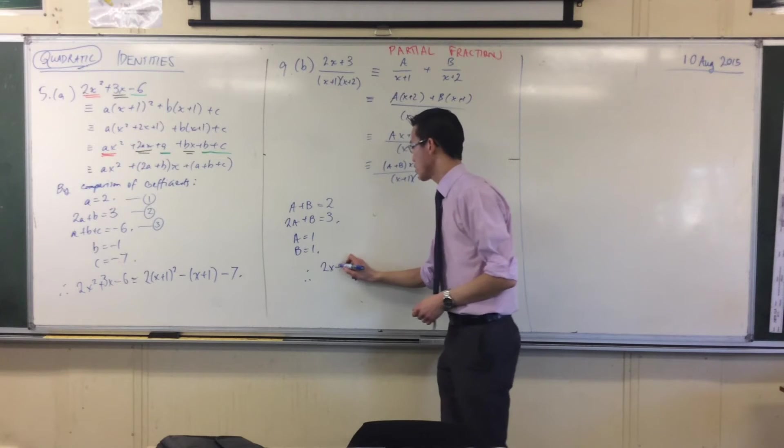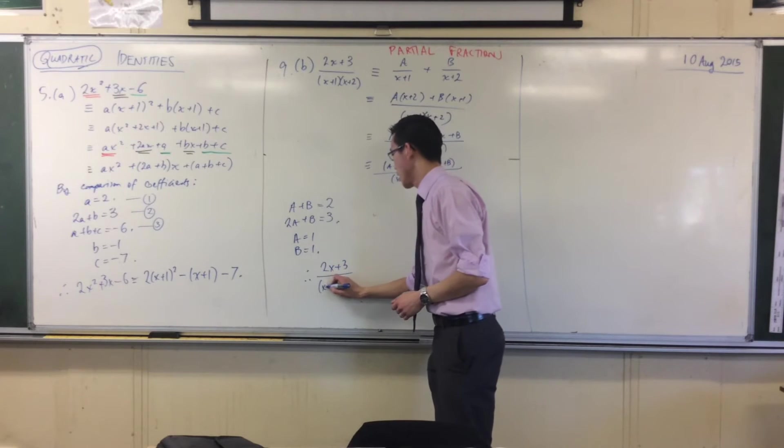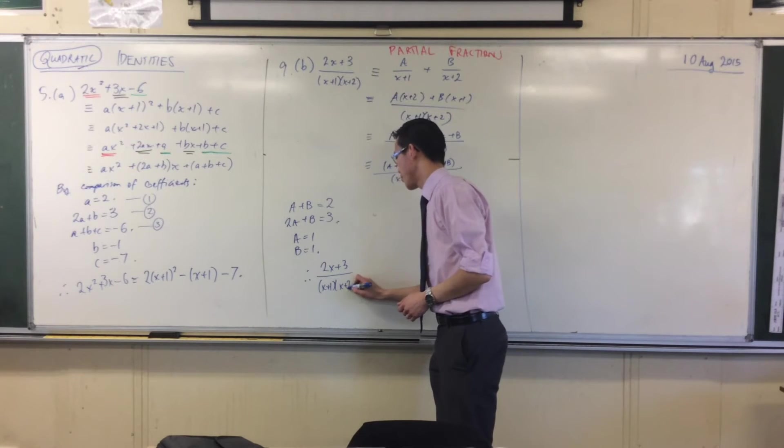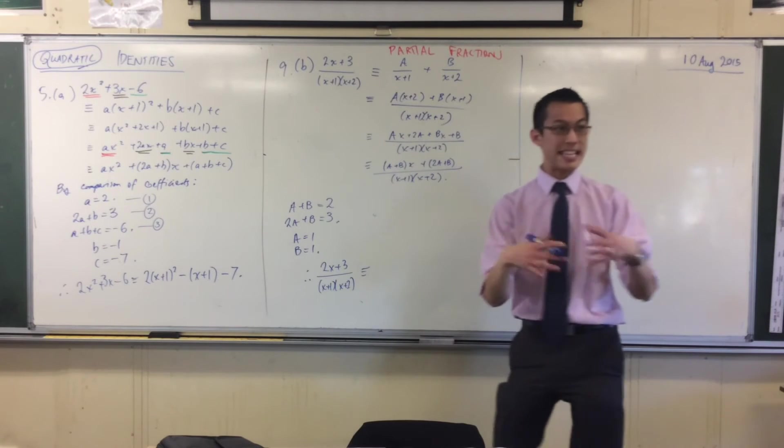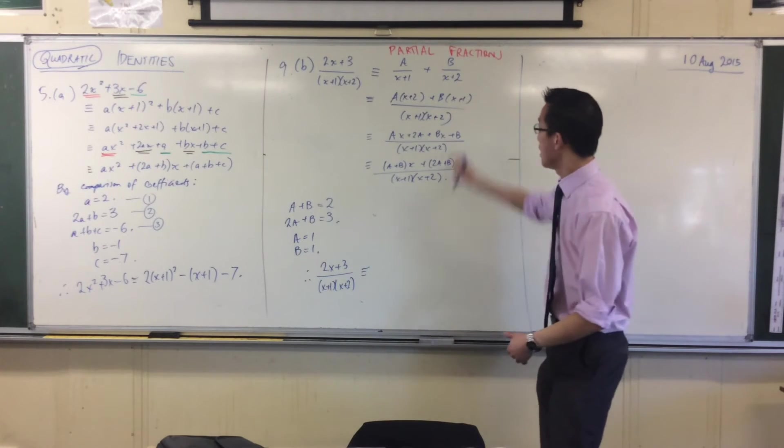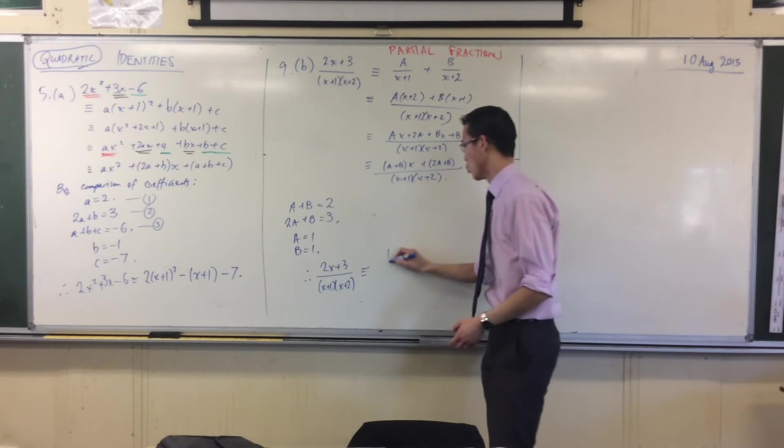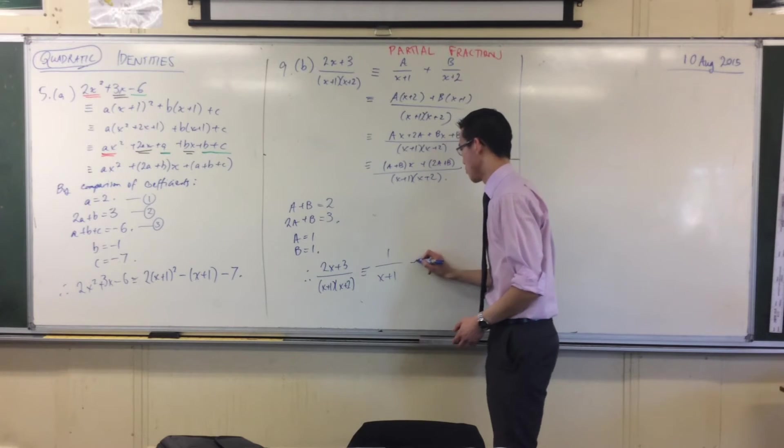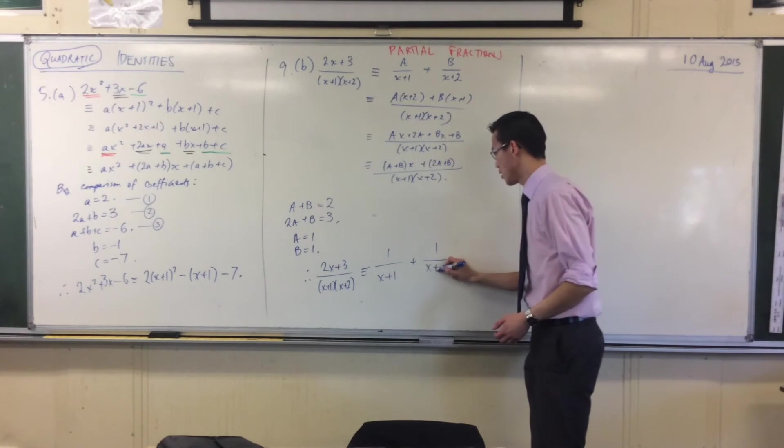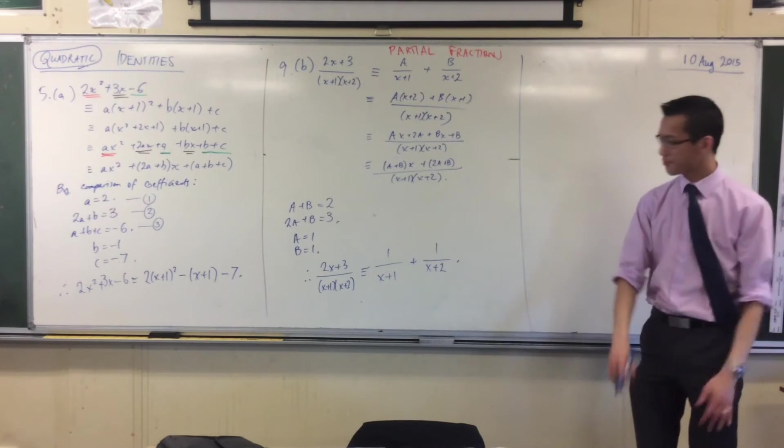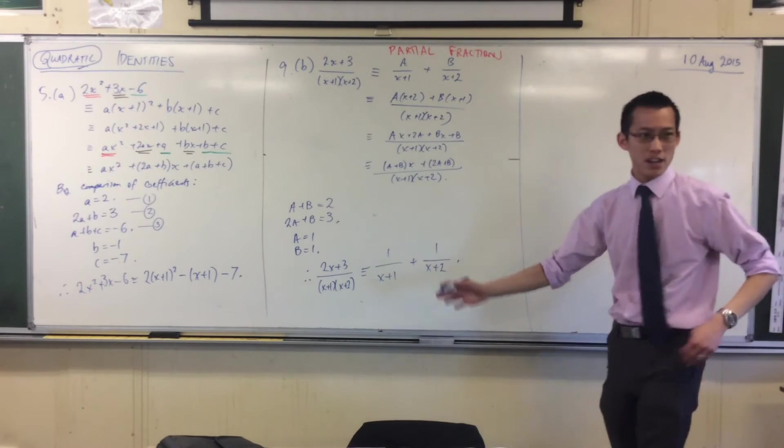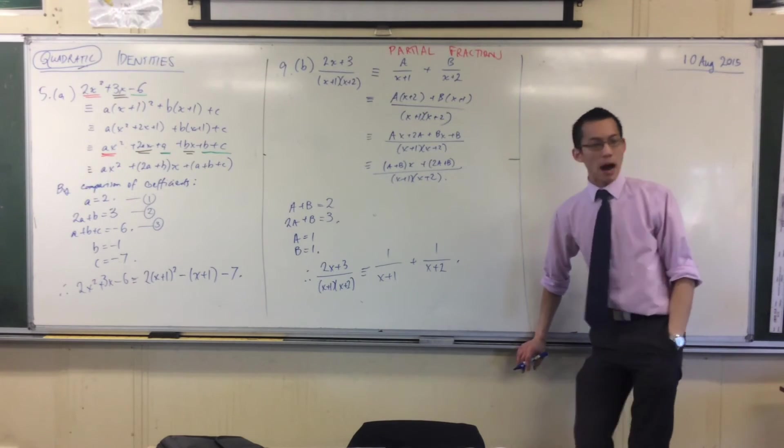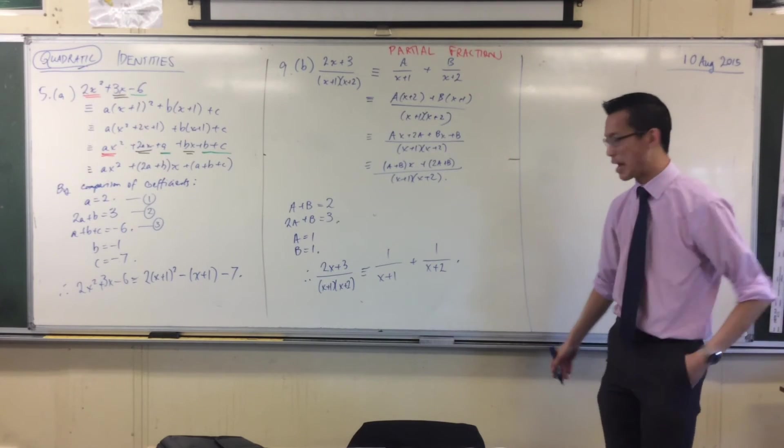So now I can go back to my very first line and say, therefore, this original fraction can be decomposed into these two partial fractions: 1 over x plus 1, plus 1 over x plus 2. So what's the big deal? Why do we do this? Part of the reason why won't be clear until next time, and I will show you. But I can tease a little bit.